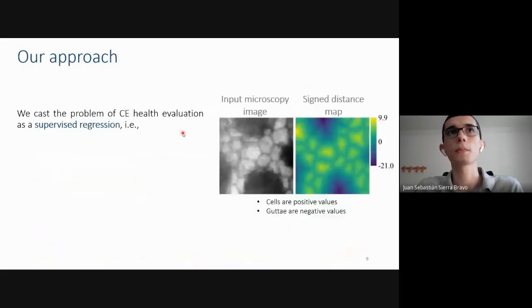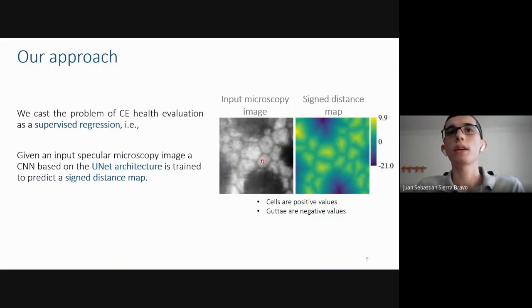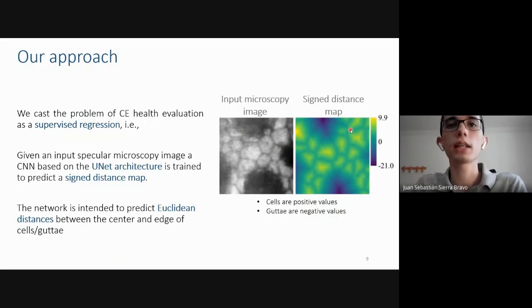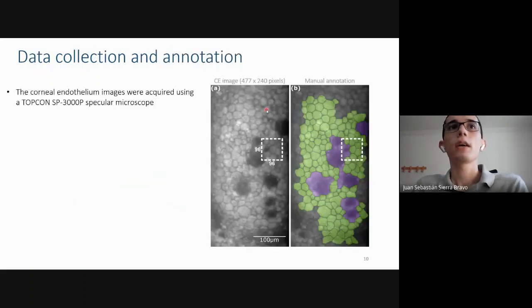So we cast the problem of cornea endothelium health evaluation as a supervised regression. Given an input specular microscopy image, a CNN based on the U-Net architecture is trained to predict a signed distance map. The network is intended to predict Euclidean distances between the center and the edge of cells or gutta. Here is an example of the input of the network and its corresponding output. In this signed distance map, each pixel with a positive value corresponds to cells and the negative values correspond to the background.